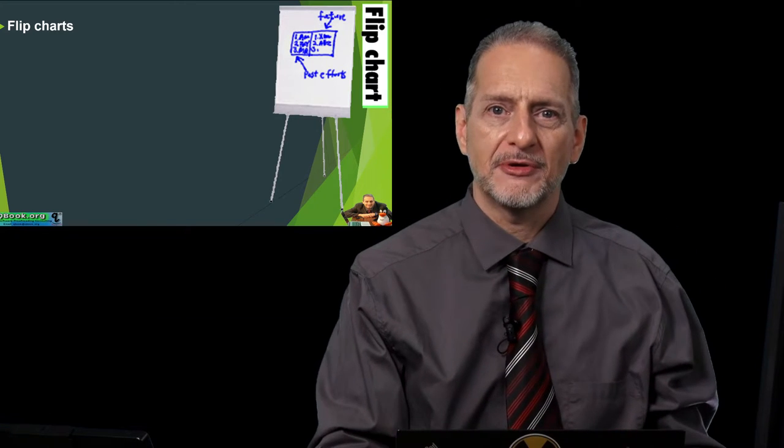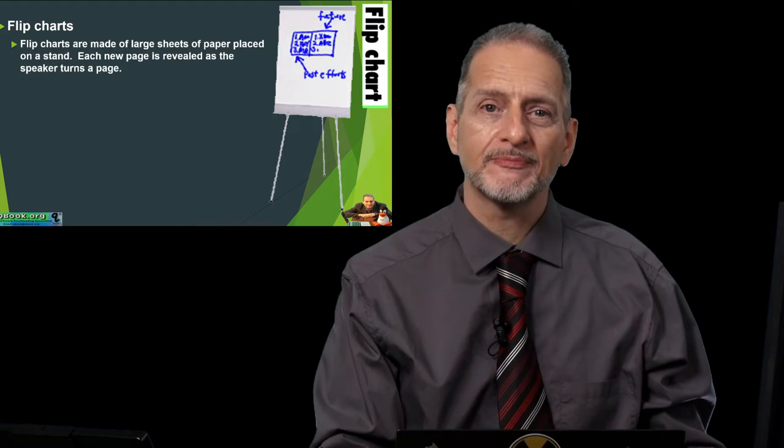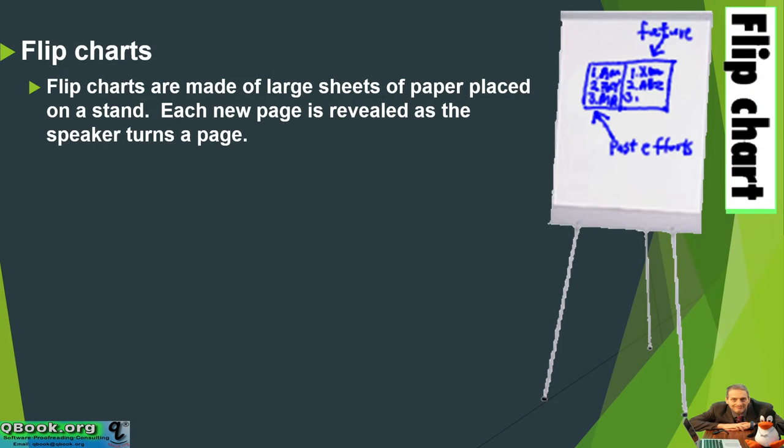The flip chart is basically a big piece of paper, and of course in this case it's like a notepad with many layers of paper on it, not just one. The flip chart is made of large sheets of paper placed on a stand. Each new sheet is revealed as the speaker turns a page.